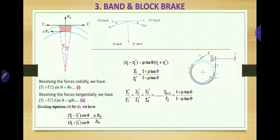This ratio T1/T1' is the tension ratio across the first block. Since T1' also acts on the second block, a similar ratio exists for the second block: T1'/T2' = (1 + μ tan θ)/(1 - μ tan θ). For the third block: T2'/T3' gives the same ratio. Similarly, for all n blocks up to the last ratio Tn-1/T2, each ratio equals (1 + μ tan θ)/(1 - μ tan θ).